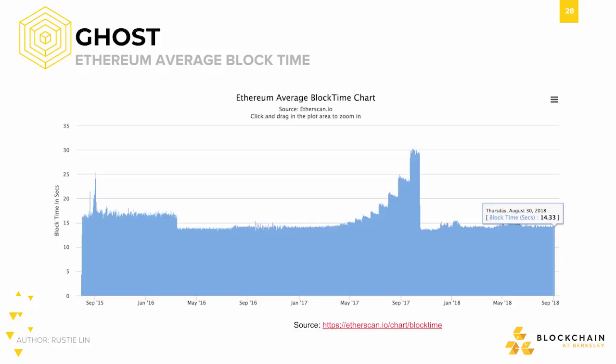Ethereum had a period when it had 17-second block times, but now it's been more around 13, 14, 15 seconds. If we round to a 15-second block time, that means that in 60 minutes — the length it takes for 6 Bitcoin blocks to be created — Ethereum has created 40. And though it's been the same amount of time, 60 minutes, for both Bitcoin and Ethereum blockchains to add blocks, it's clear to see that 40 confirmations in Ethereum might be more secure than 6 confirmations in Bitcoin.